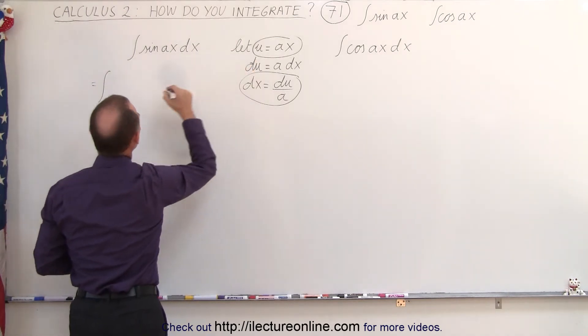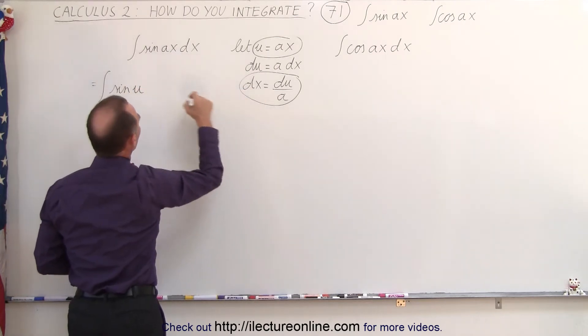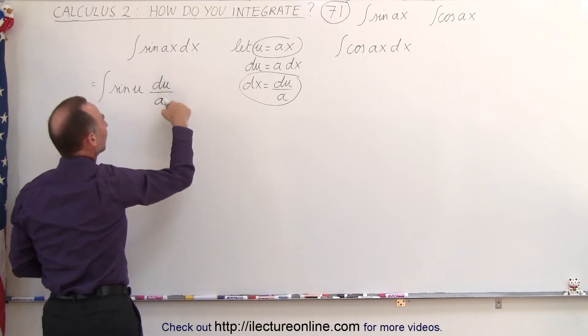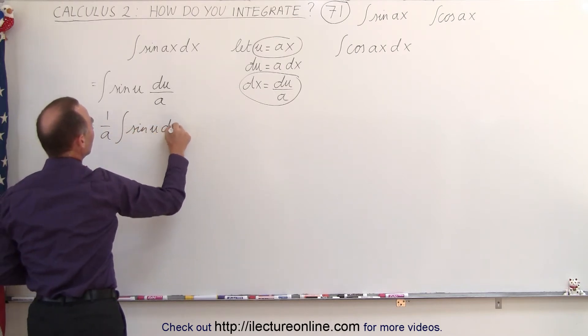So instead of Ax, we write u, so this becomes the sine of u, and instead of dx, we write du over A. And then of course, we can take the 1 over A outside integral sine, so this becomes equal to 1 over A times integral of the sine of u times du.